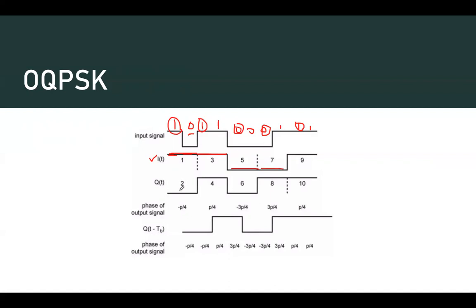For the even data stream Q(t), we consider the even-indexed bits: 0, 1, 0, 1, 1. Each even bit also lasts for two slots. In normal QPSK, we can see that there is a transition from 1 to 0 in the odd stream, and simultaneously a transition from 1 to 0 in the even stream — meaning 11 gets converted to 00. At the same instant, both bits transition, causing a zero crossing and hence the side lobe issue.